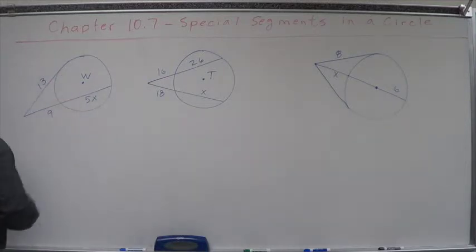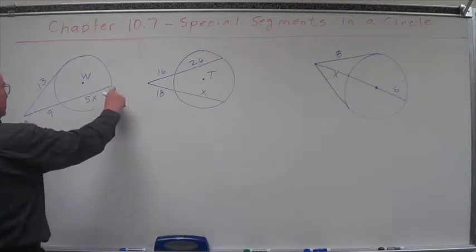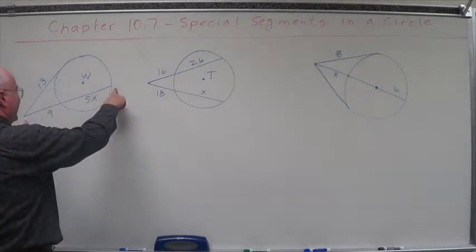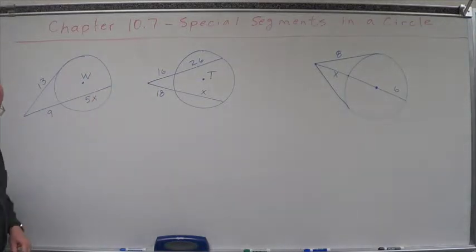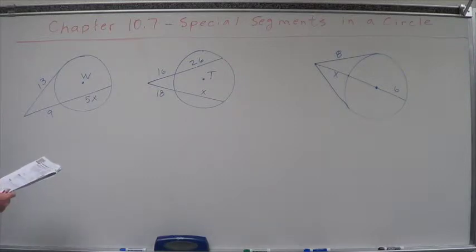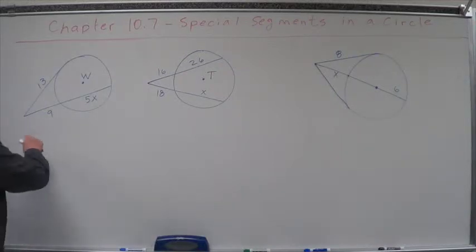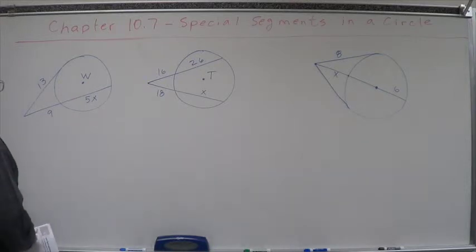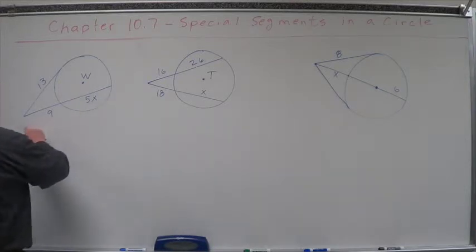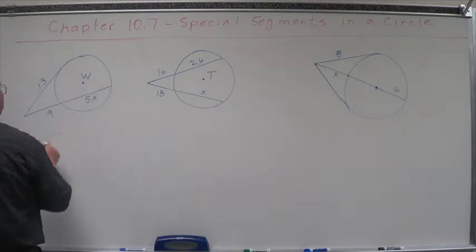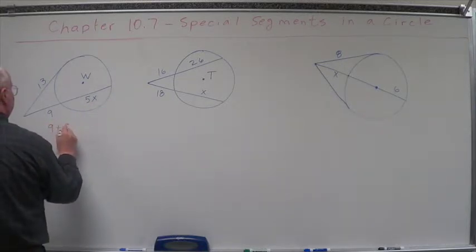We're going to use the tangent and secant segment theorem. Remember that it says the square of the tangent equals the entire thing times the external portion. So let's put this together. Let's add this whole thing up.